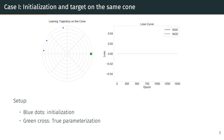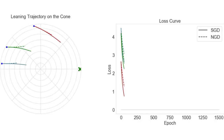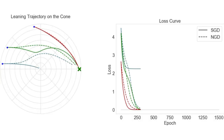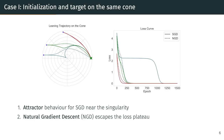On the right side we will see the loss curves where solid lines show stochastic gradient descent and dotted lines show natural gradient descent. For stochastic gradient descent shown in solid lines, we observe an attractive behavior near the singularity resulting in a loss plateau. On the other hand, we see that natural gradient descent can escape this loss plateau.